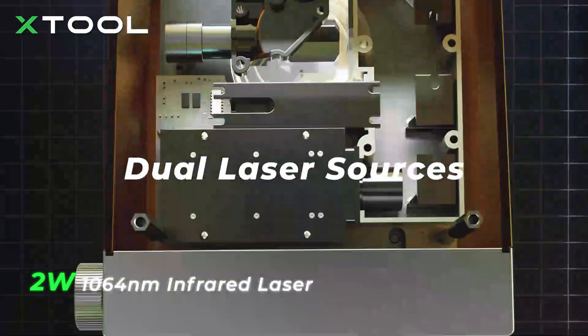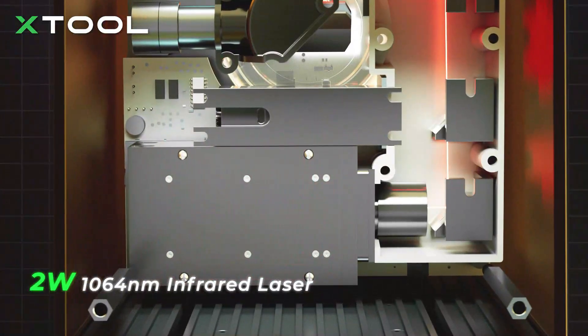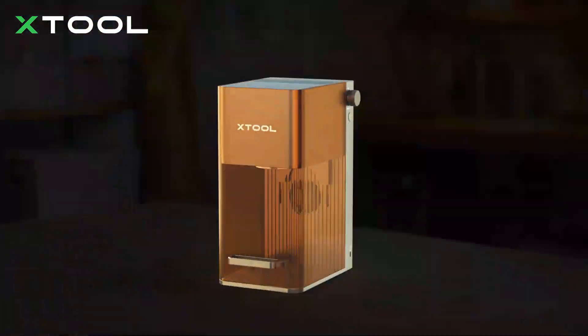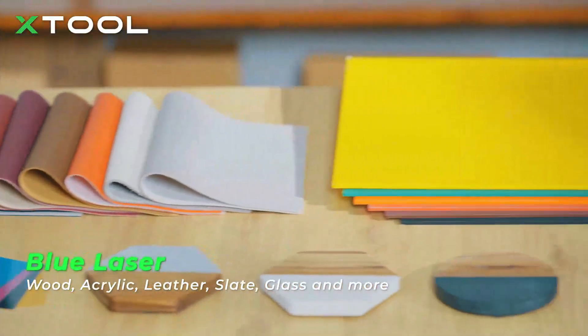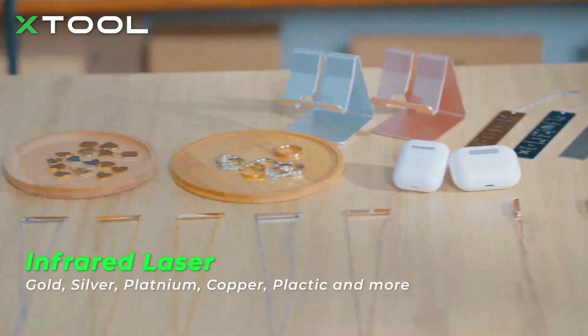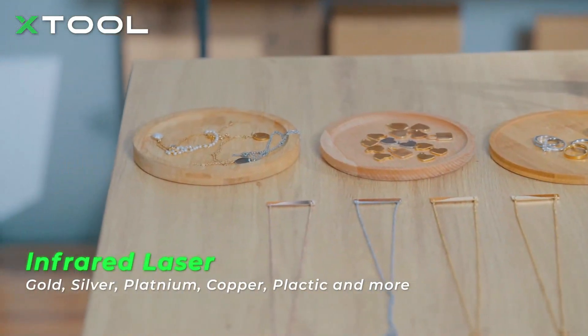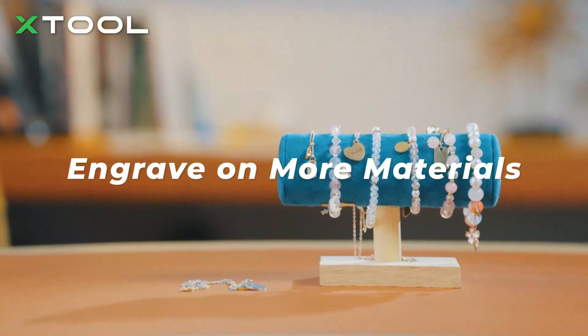F1 has a 2-watt infrared laser and a 10-watt blue laser. The blue laser is used to engrave more common materials, while the infrared one is for metal and plastic engraving. With an F1 in hand, only sky's the limit.